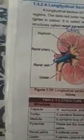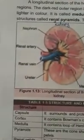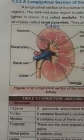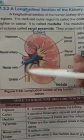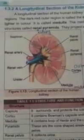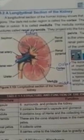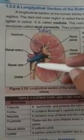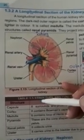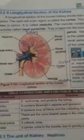The renal pyramids empty into a large duct called the ureter. The ureter collects all the urine from both kidneys and carries it towards the urinary bladder. When all the useful products have been absorbed back into the body, the remaining waste — called urine — travels via the ureter to the urinary bladder, and from there it is excreted out through the urethra.